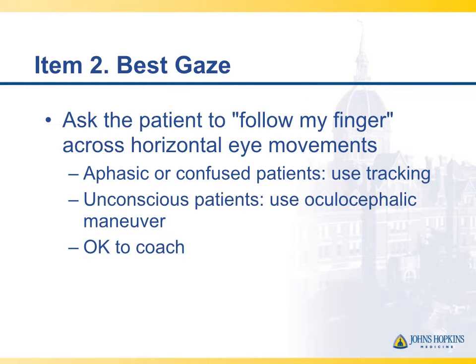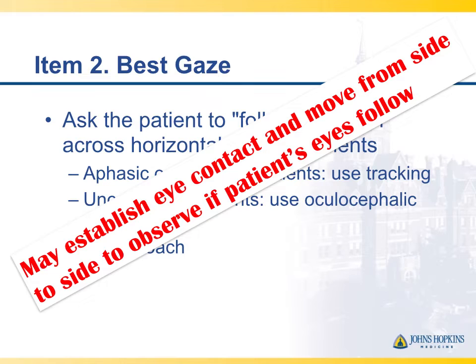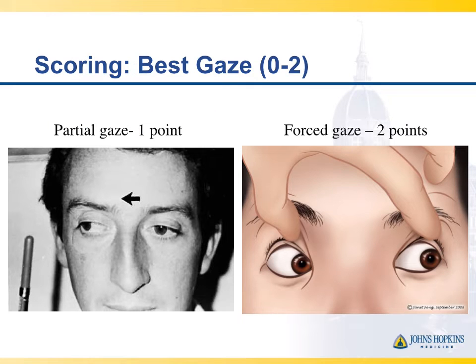Item number two is best gaze. You ask the patient to follow your finger with their eyes to assess horizontal eye movements, to see if the eyes can fully bury bilaterally. You can use the oculocephalic maneuver in the unconscious individual. One point is given for a partial gaze paresis, and two points for forced gaze deviation when they can't cross midline.